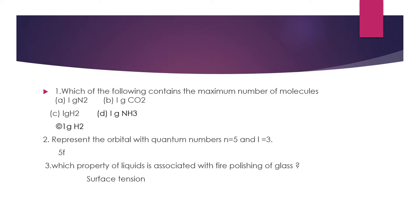Question 2: Represent the orbital with quantum numbers n=5 and l=3. Here n is the principal quantum number giving the main shell (shell 5), and l is the azimuthal quantum number giving the sub-shell. Since l goes s, p, d, f (0,1,2,3), l=3 corresponds to f. So the answer is 5f.